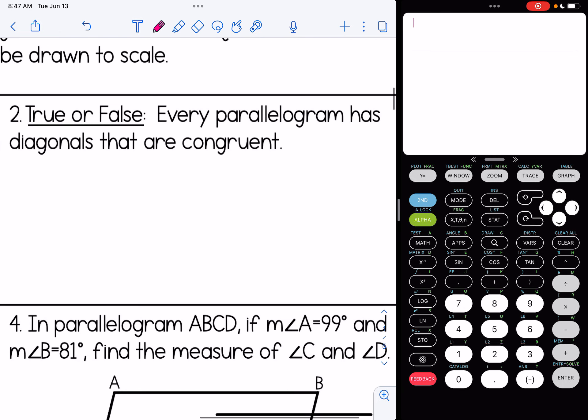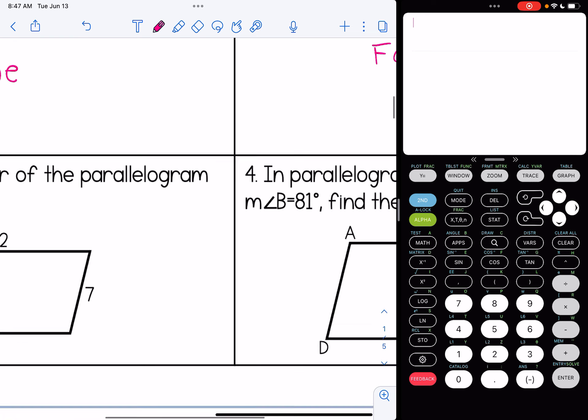Number two, true or false, every parallelogram has diagonals that are congruent. That is going to be false. We just looked at that in the picture. The diagonals are not congruent.